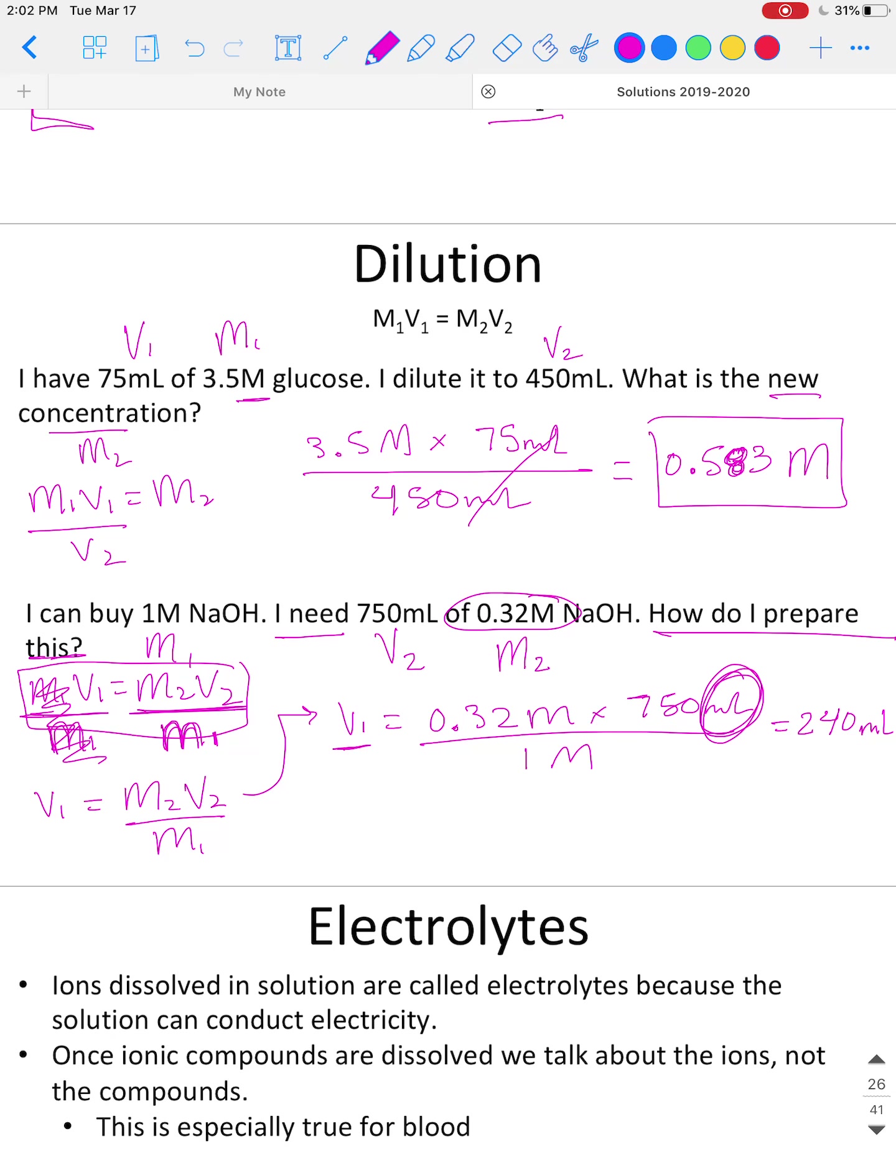So the question is, how do I prepare this? So the way we would answer that would kind of be in sentence format: you would take 240 milliliters of your stock 1 molar NaOH solution, and then we would dilute it to 750 milliliters with water. So that actually answers the question of how you would prepare it.